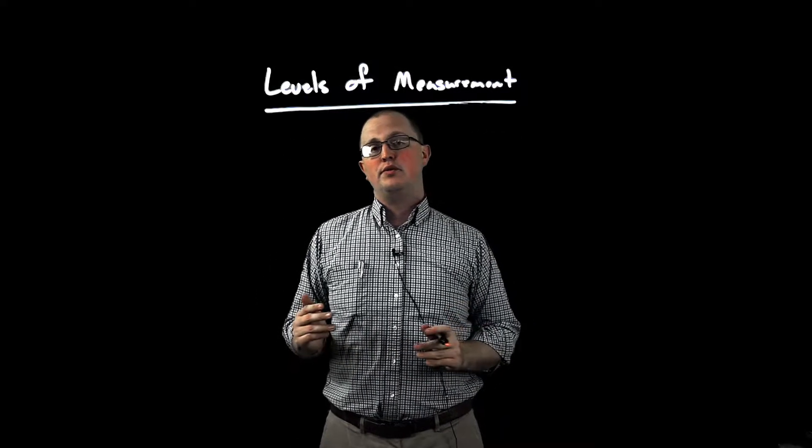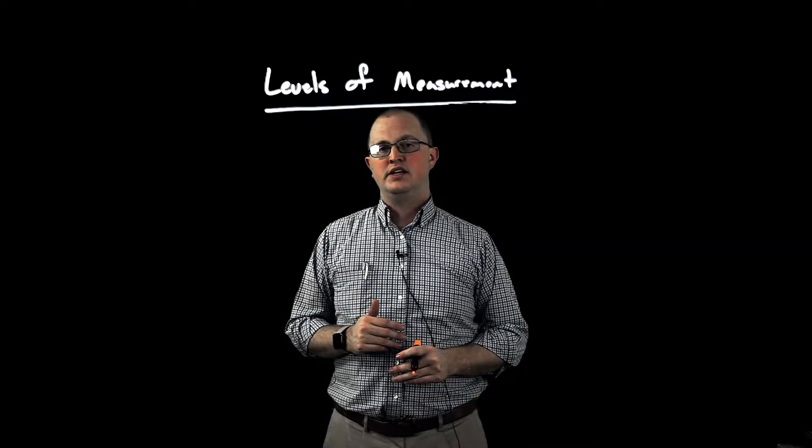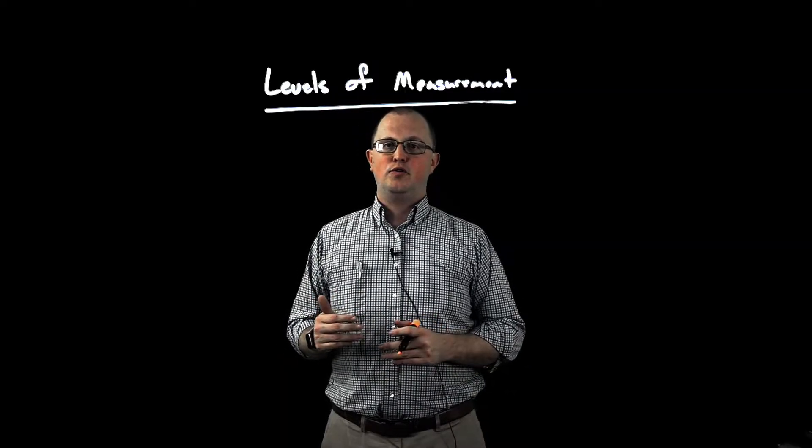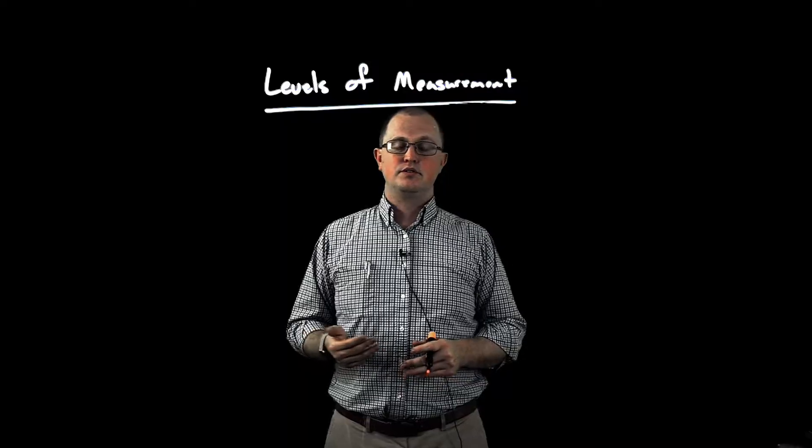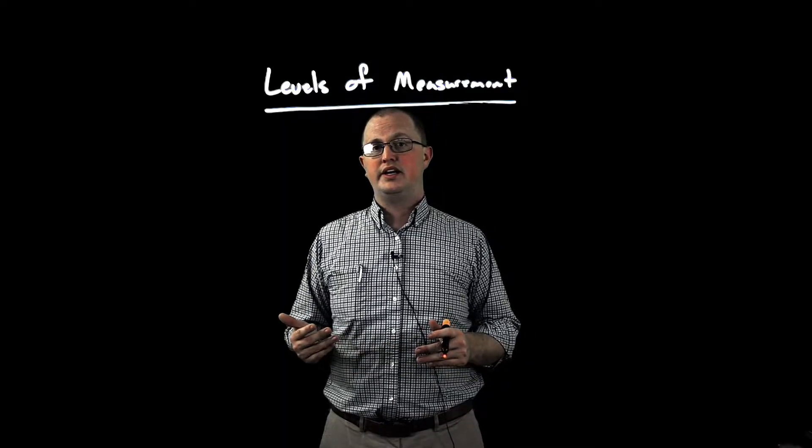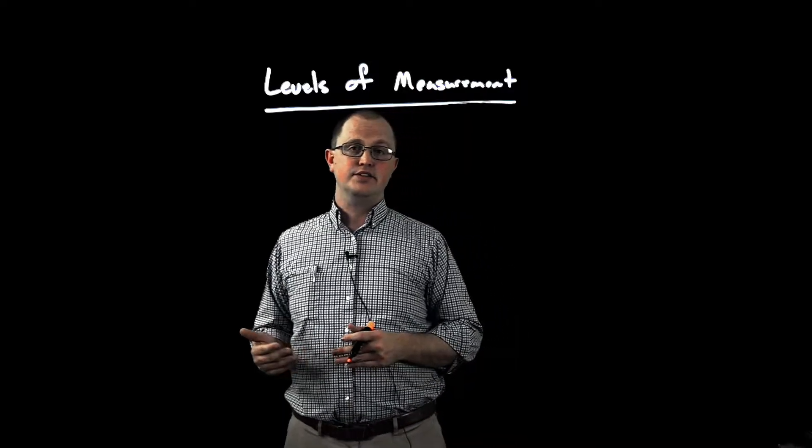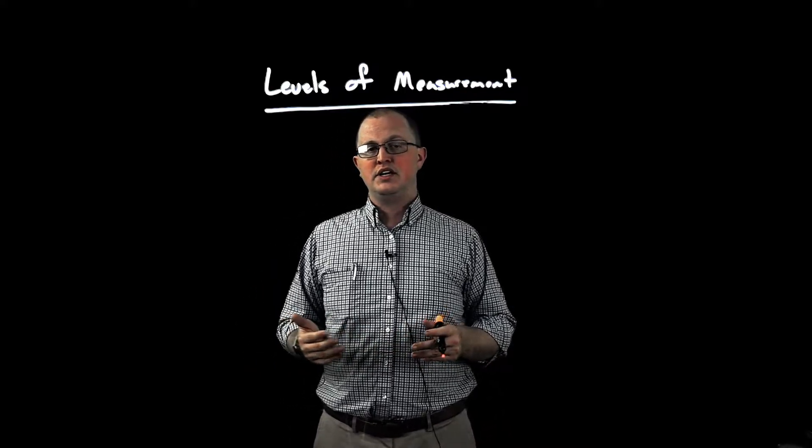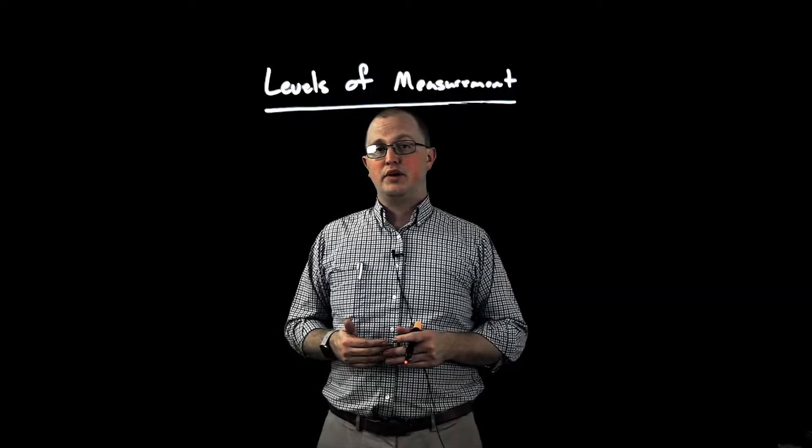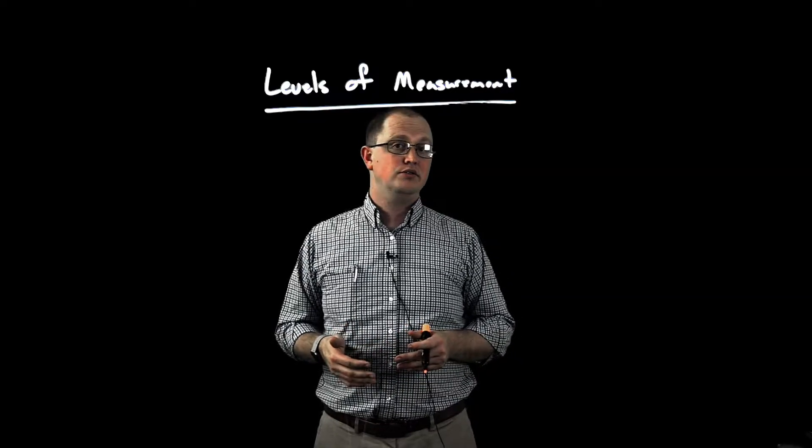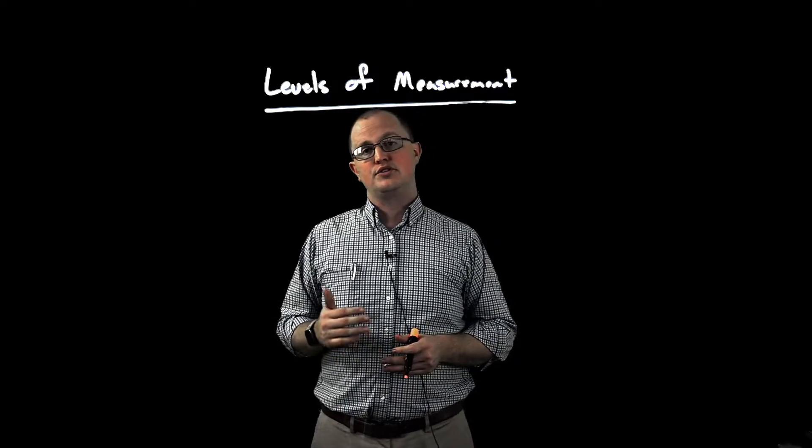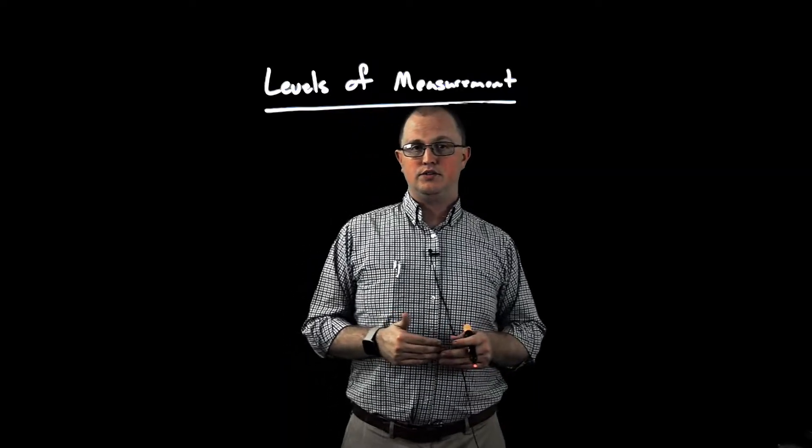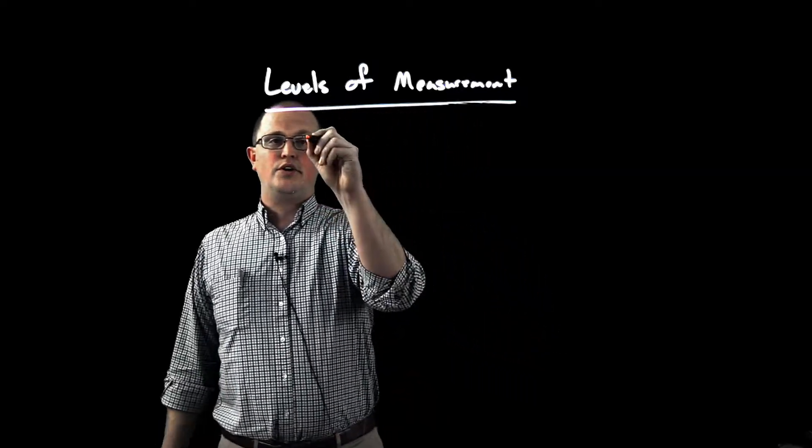All right, so nominal and ordinal data generally comes in the form of non-numeric answers. We generally can't apply any kind of mathematical analysis to those values. The next two types of data measurement generally come in numeric values, and we can generally do some analysis on it, but there's some key differences between the two. So the first type is called interval data.